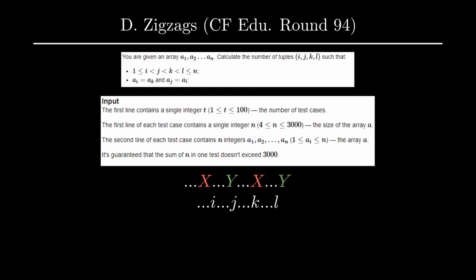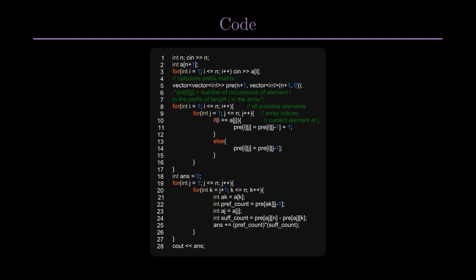Let's look at the code. We take the input of array a and then initialize the prefix array. In two nested for loops we build the prefix array: for i from 1 to n we iterate over all possible elements (since elements can only be from 1 to n), and for j from 1 to n we iterate over all array indices. If i equals a[j], then prefix[i][j] = prefix[i][j-1] + 1, incrementing the count; otherwise we keep it as is.